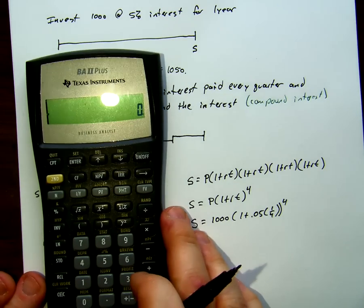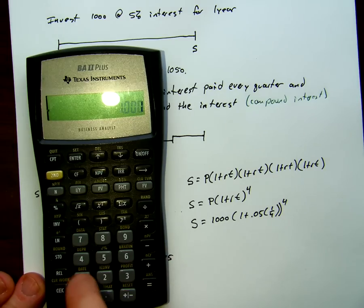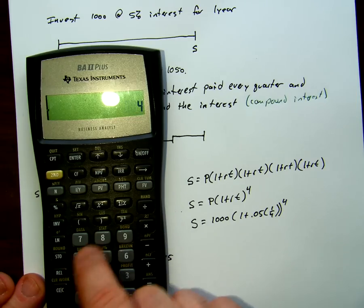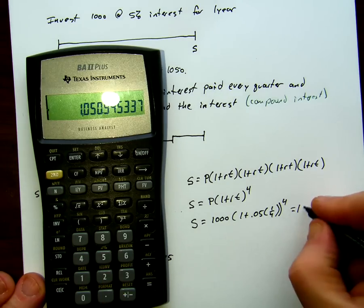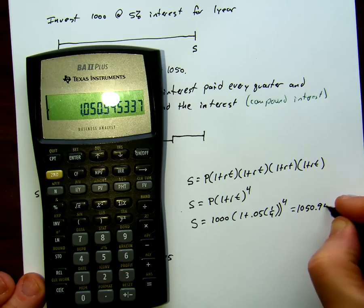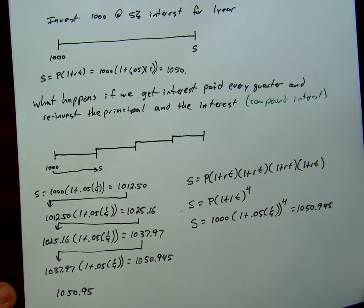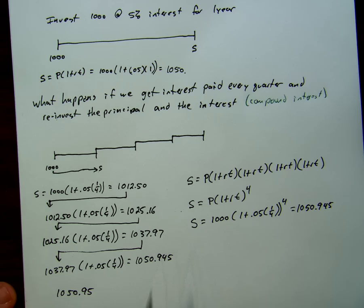Let's calculate that in our calculator: 1,000 times (1 + 0.05 times 1/4) to the exponent 4 equals $1,050.945. We get the same value because it's the same calculation.